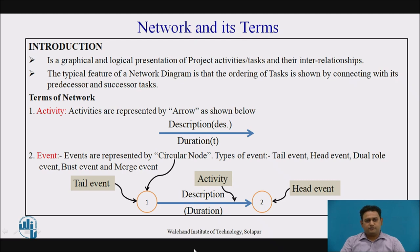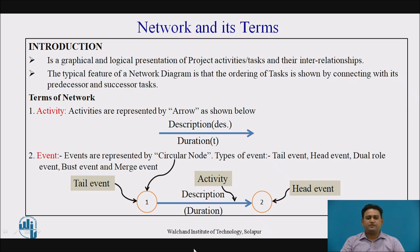Now let's see the network and its terms. The network is nothing else — it is a graphical and logical presentation of a particular project and its activities with their interdependency. Here in this network diagram, the particular order of tasks or activities are shown in such a way that the predecessor and successor activities are also indicated. The network is a better presentation compared to the Gantt chart, which we will see later.